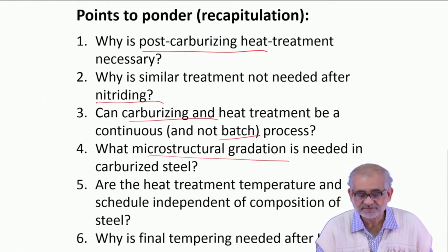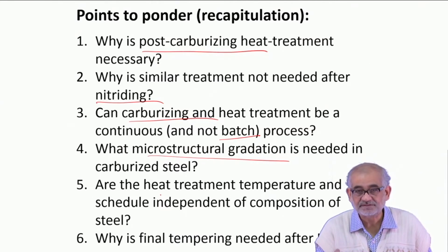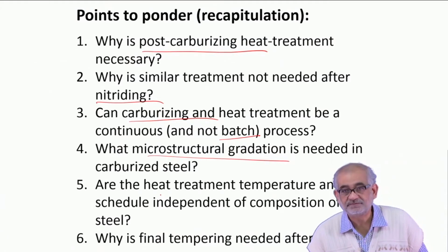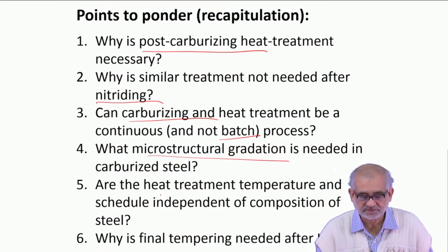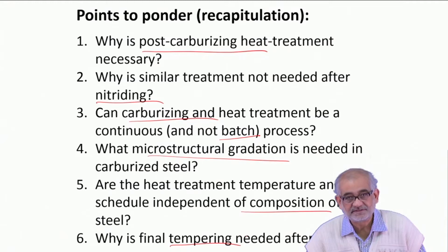The microstructural gradation we need runs from predominantly martensite or tempered martensite all the way to simply pearlitic or ferrito-pearlitic microstructure. The composition does play a role - if dealing with alloy steel you treat it one way, if plain carbon steel then temperature and time requirements are a little different. We certainly need a final tempering treatment so that stresses are relieved and some amount of machinability is restored.